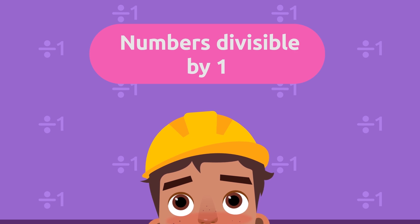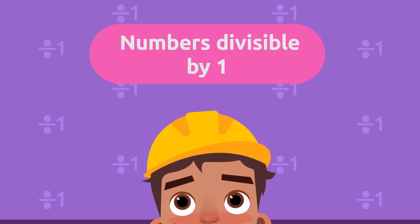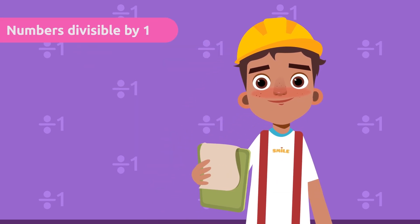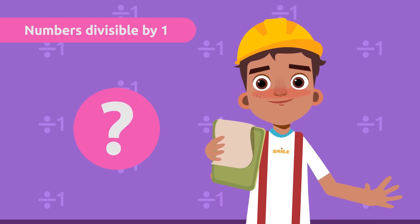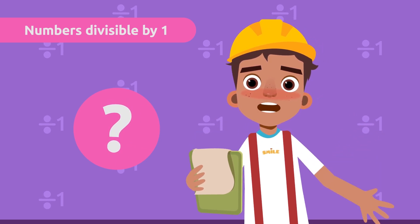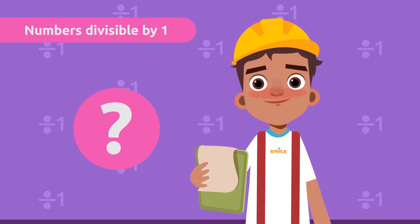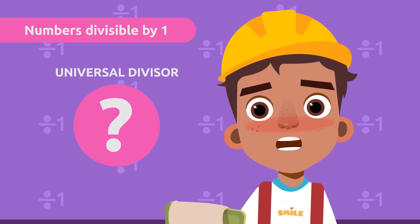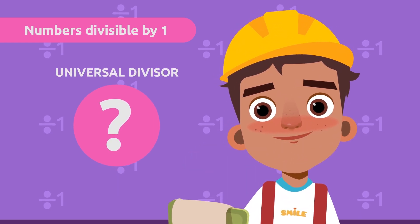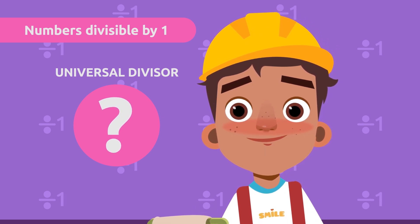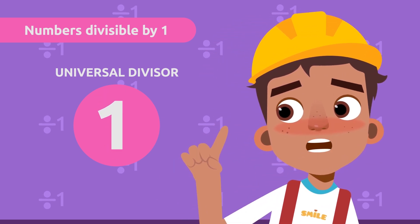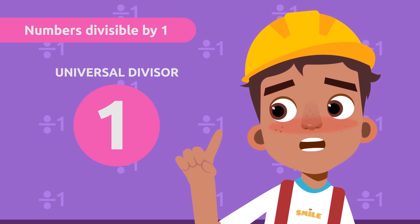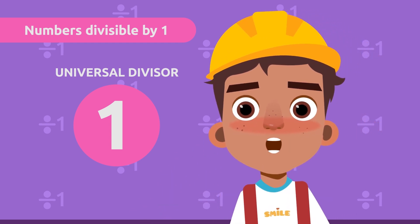Numbers divisible by one. There's a very special number for which no divisibility rule is needed, because any number you can think of is divisible by it. It's known as the universal divisor. Can you tell me what it is? Correct — the number one. Every number can be divided by one and the remainder will always be zero.